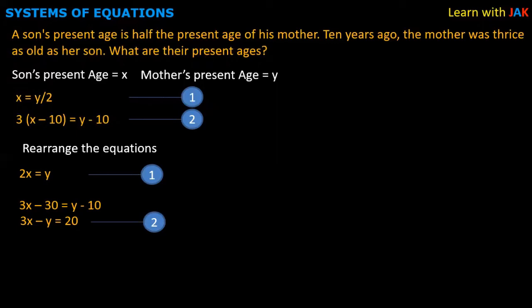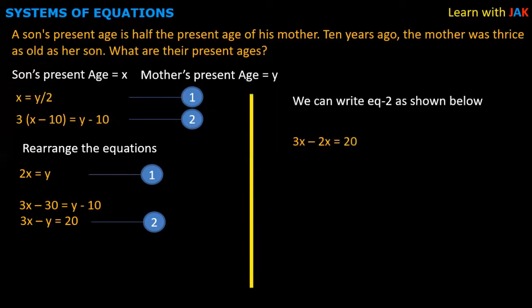We have equation 1: 2x equals y, and equation 2: 3x minus y equals 20. We substitute: 3x minus 2x equals 20, so x equals 20. And 2x equals y. In this class, we are going to solve two problems in real life and puzzles in real life. We are going to convert the equations in the same way.